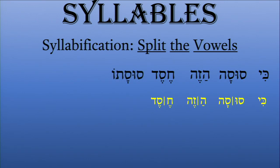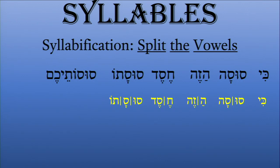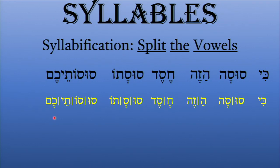For a slightly longer word like 'susato,' you divide after the Shuruk, then draw a line after the Kamatz, and you're left with Tav and Holam-Vav — giving three syllables: 'su,' 'sa,' and 'to.' For a long word like 'susoteichem,' you split the vowels and get four syllables: 'su,' 'so,' 'te,' and 'chem' — the final syllable 'chem' is closed because it ends with the consonant Mem.